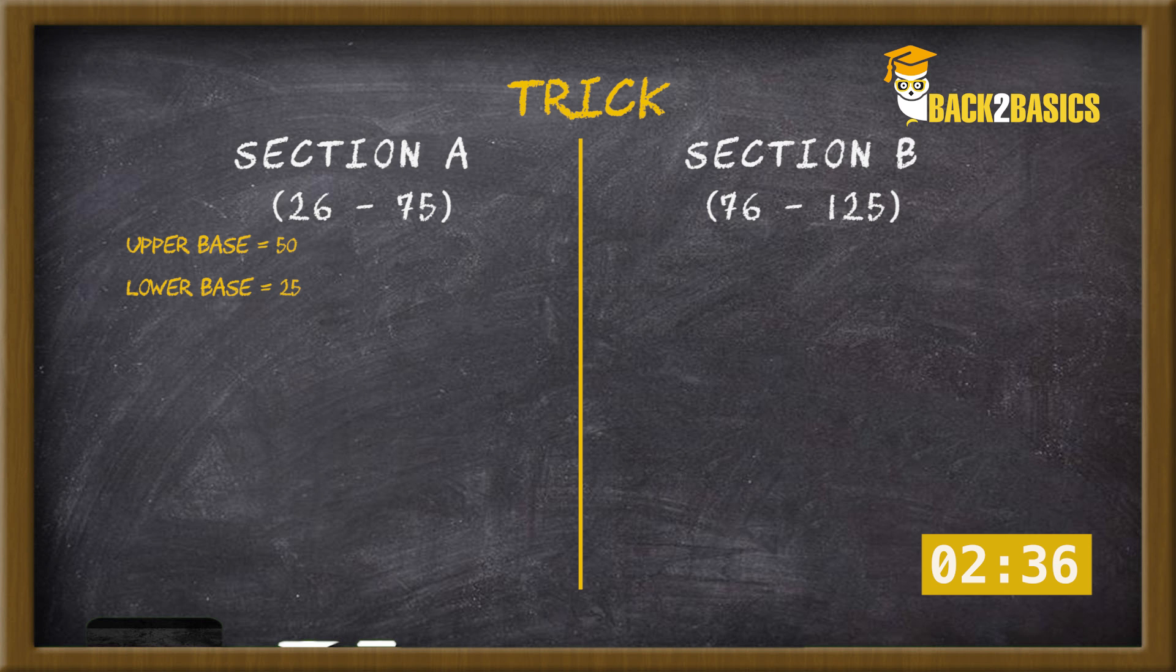Let's take 53 as an example. 53 square is 2809. To get this answer, first write the lower base which is 25. Next step is to compare 53 with the upper base that is 50. So we get plus 3.